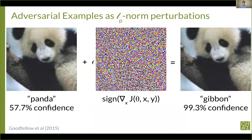These so-called LP norm attacks, where the norm is constrained to lay in a small ball under some norm, are kind of very theoretically tractable attacks. They give us some really useful insights into the security and robustness of ML systems. But it's not all there is to adversarial examples, especially when we go outside of computer vision.